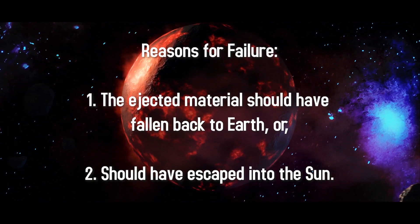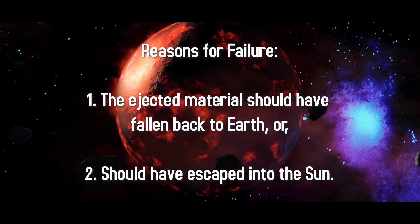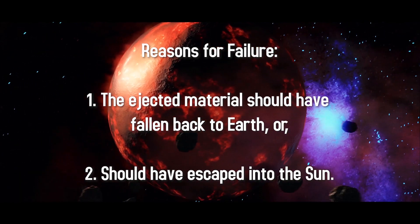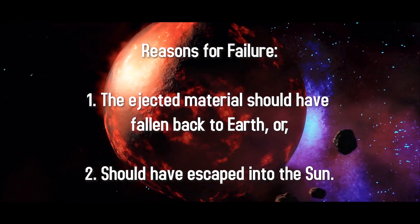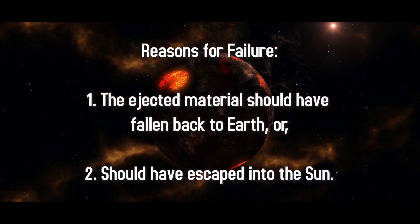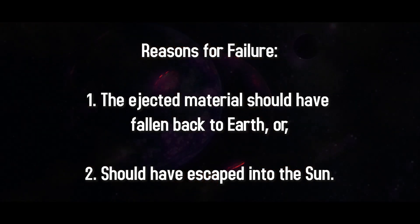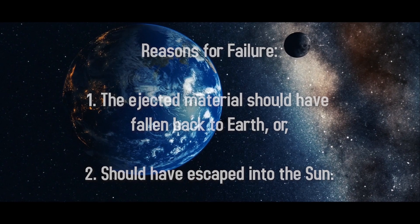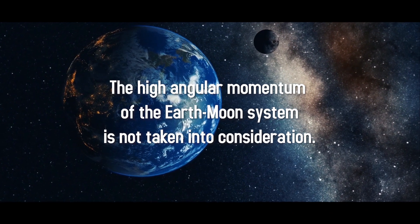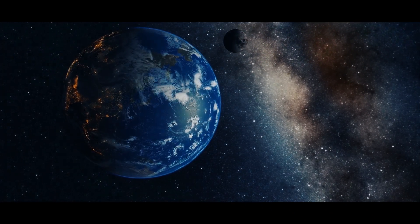This hypothesis fails because it requires a molten Earth, and material that would fly off Earth's equator would have to fall back to the surface of the Earth or escape into orbit around the Sun — it cannot simply go into orbit around the Earth. The biggest flaw of all three of these hypotheses is that they cannot account for the high angular momentum of the Earth-Moon system.